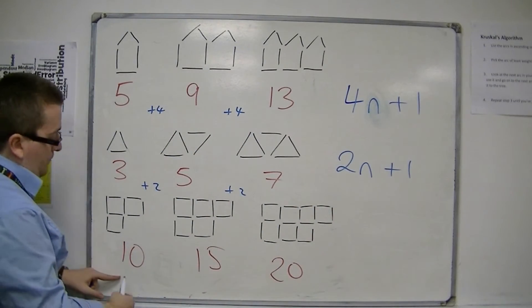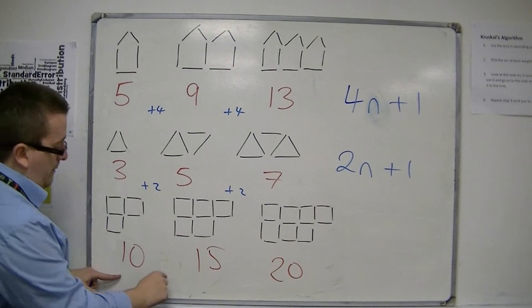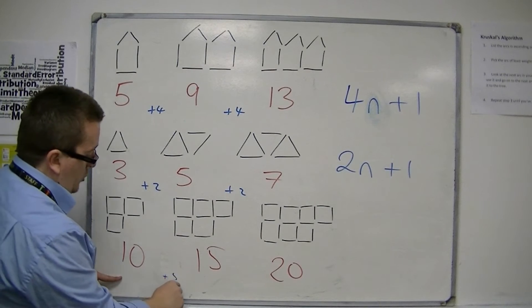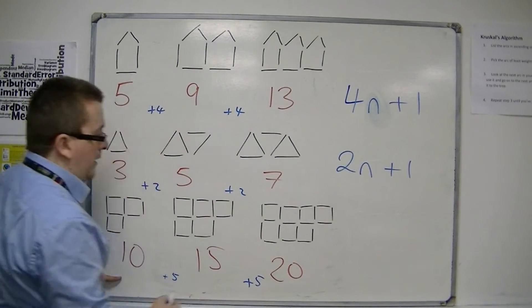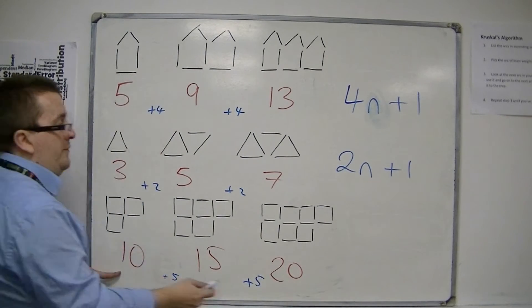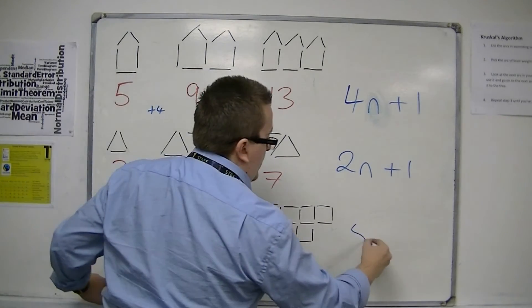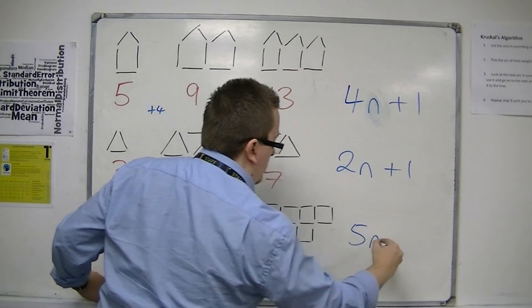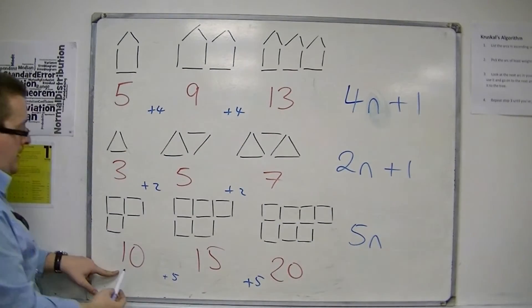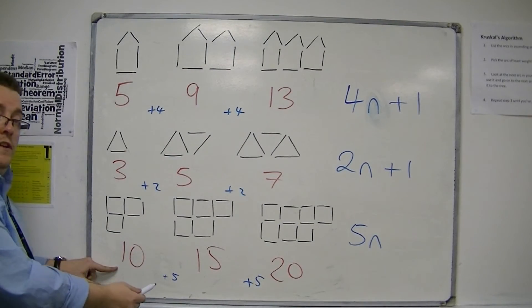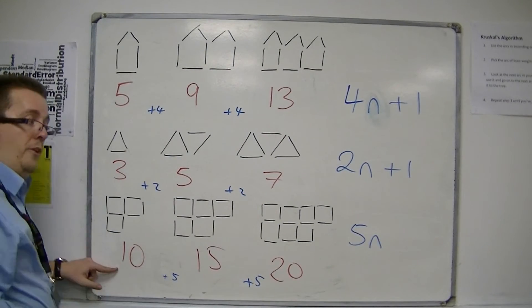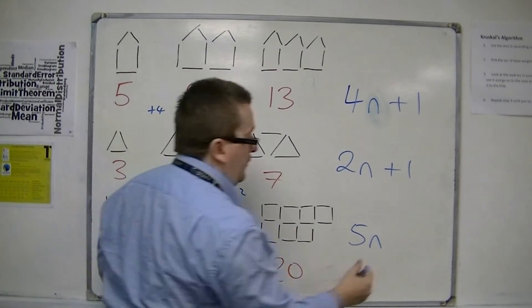Let's look at this one. This time I'm adding on 5 each time, so it's the 5 that goes in front of the n. And then 10 take away 5 is 5, so positive 5.